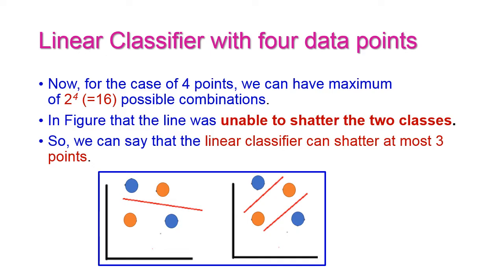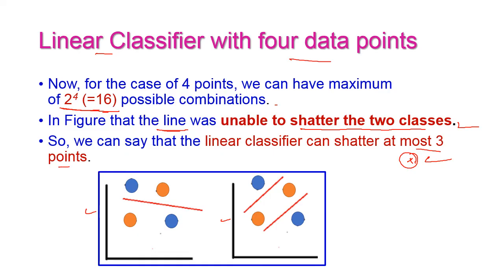Now let us increase one more data point in this linear classifier, that is with four data points. If we increase one data point, the number of combinations increases to 2 power 4, that is 16 possible combinations. In these two cases, a single linear classification is not at all possible to shatter the two classes. So, with a linear classifier, the maximum number of data points we can shatter is only three.